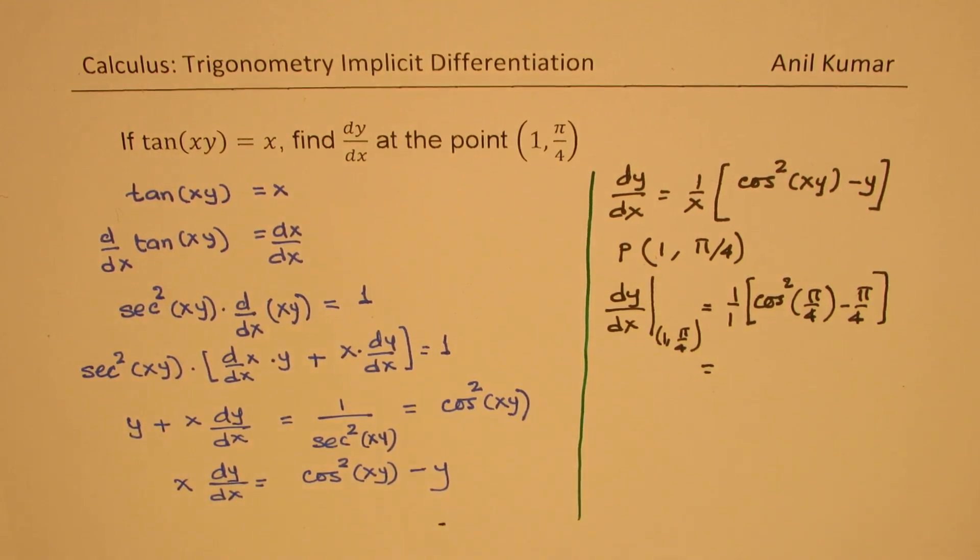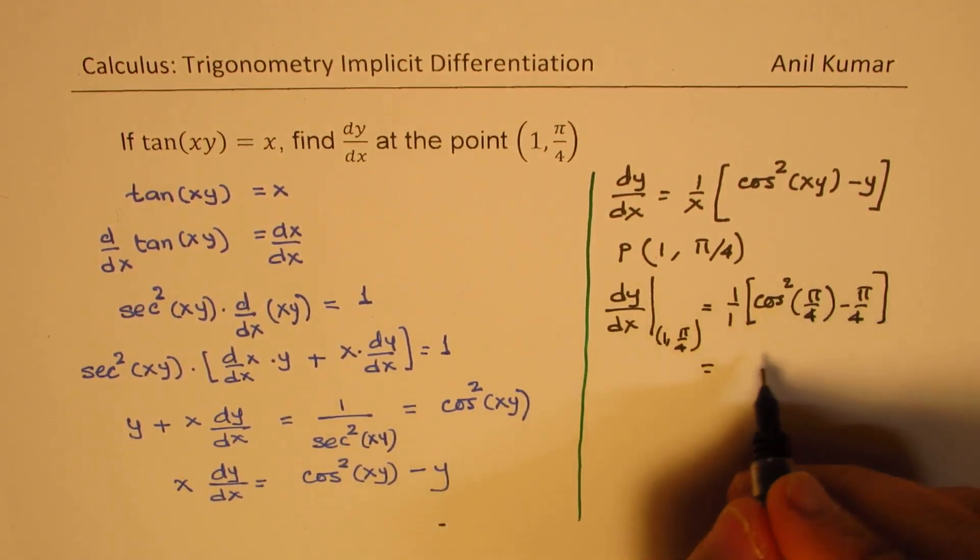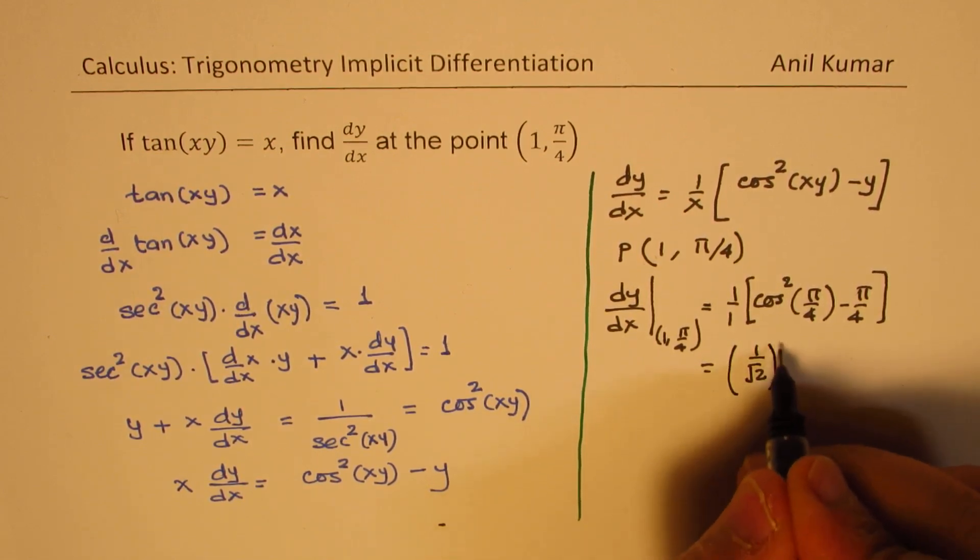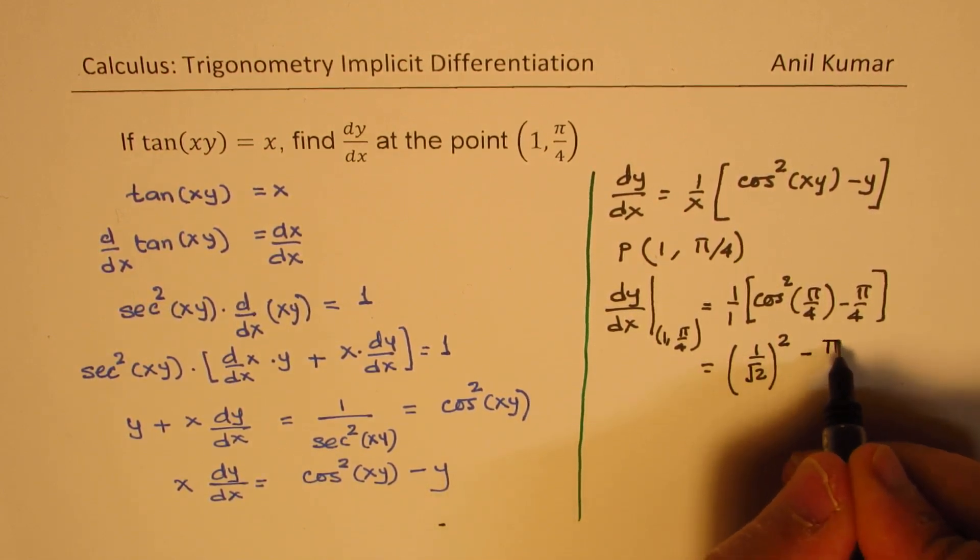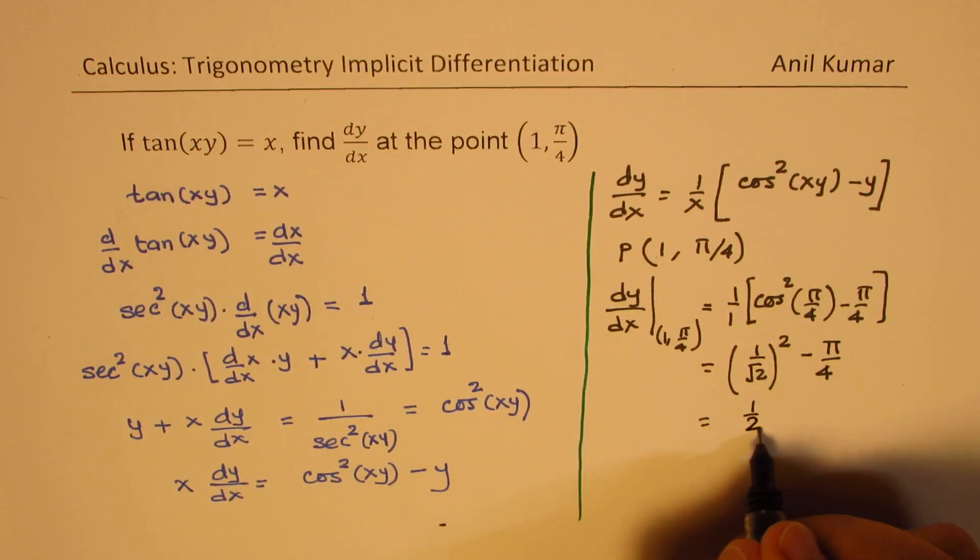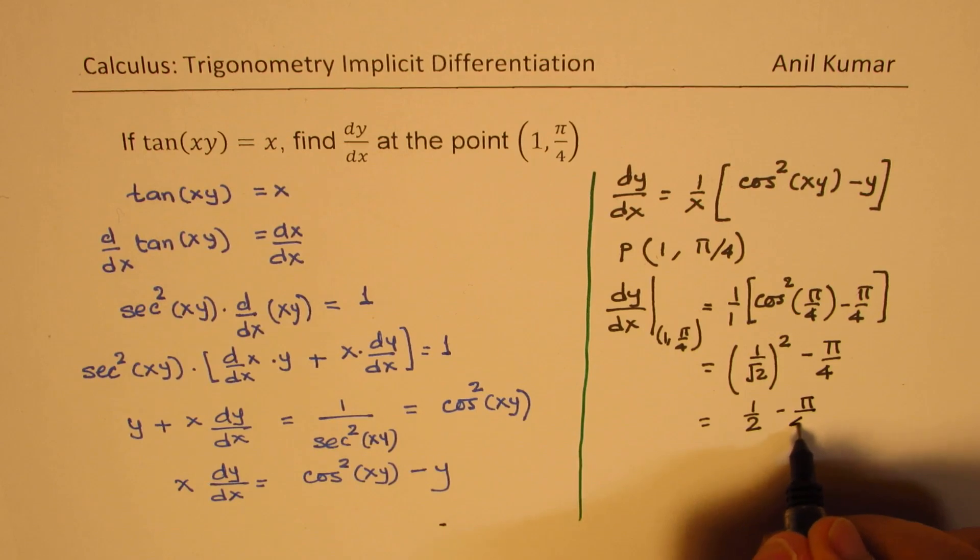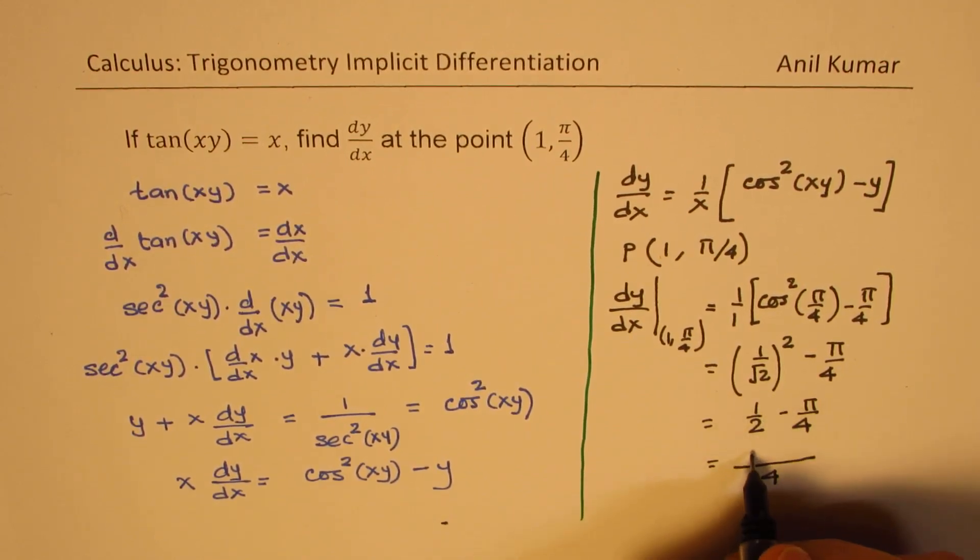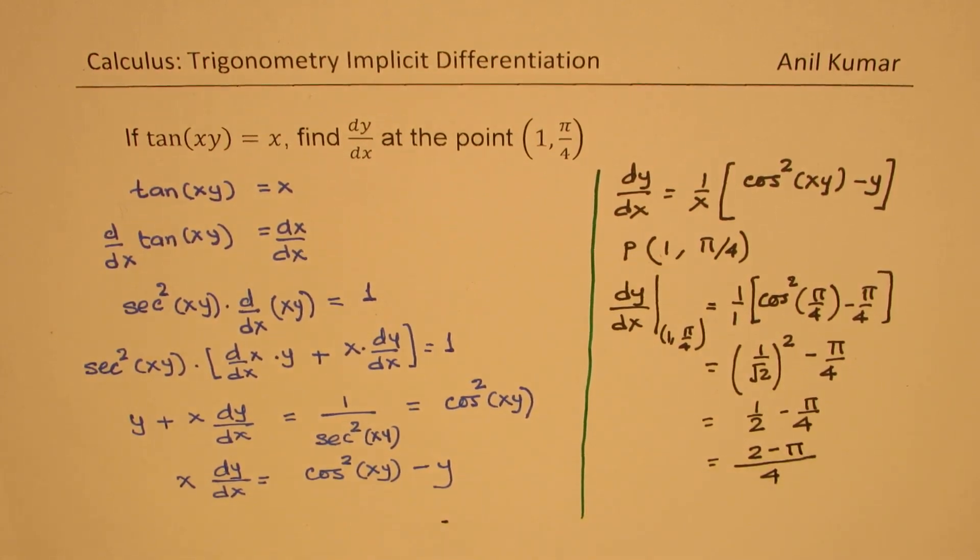So, that is equal to, now, cos(π/4) is 1 over √2. So, we have (1/√2)² minus π/4, which is 1/2 minus π/4. You can take 4 as a common denominator, so you get (2-π)/4 as your answer.